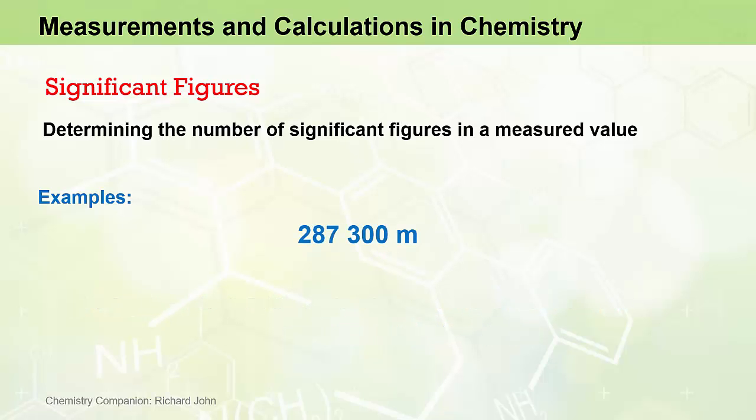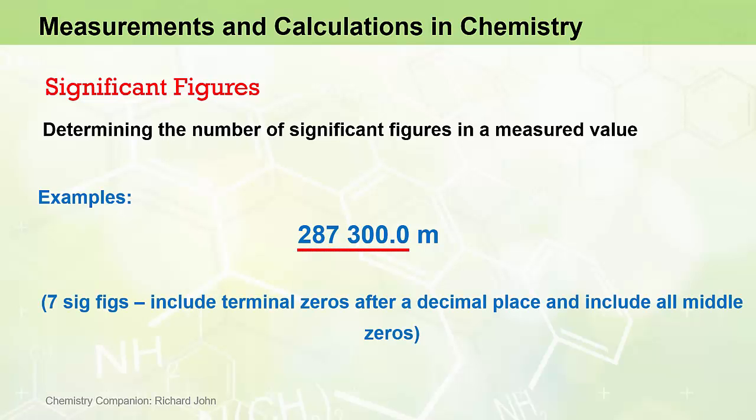The measured value 287,300 metres has four significant figures because we disregard all terminal zeros. However, 287,300.0 metres has seven significant figures because we include the terminal zero after the decimal place and all middle zeros.